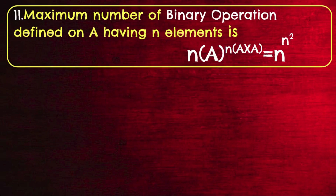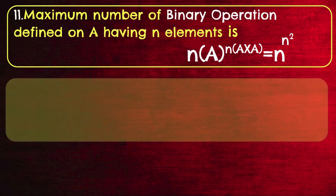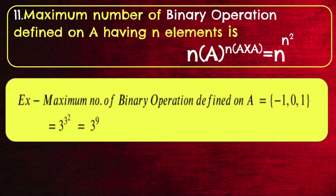What is the maximum number of binary operations defined on a set A having N elements? A binary operation is a function from A × A to A. Using the total functions formula, it is N(A) raised to N(A×A), which is N raised to N². Example: the maximum number of binary operations on A = {−1, 0, 1} is 3^(3²) = 3^9.